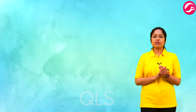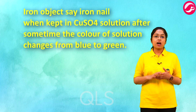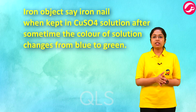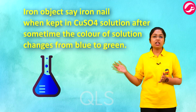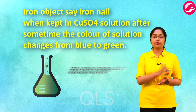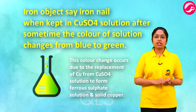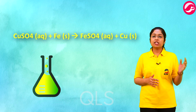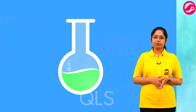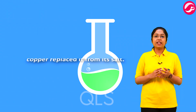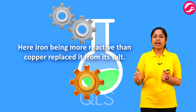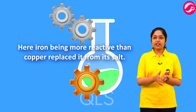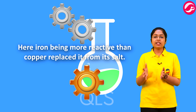The best example is the reaction of copper sulfate solution with iron. When an iron nail is kept in copper sulfate solution, after some time the color of the solution changes from blue to green. This occurs due to the replacement of copper from copper sulfate to form ferrous sulfate solution and solid copper — because iron is more reactive than copper and displaces it.